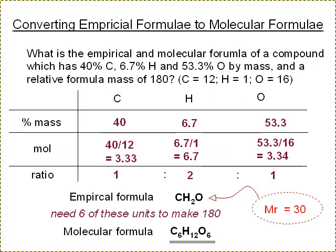OK, and here's a final example, converting empirical formula to molecular formula. What is the empirical and molecular formula of a compound which is 40% carbon, 6.7% hydrogen, 53.3% oxygen by mass and a relative formula mass of 180? So there are the amounts by mass.